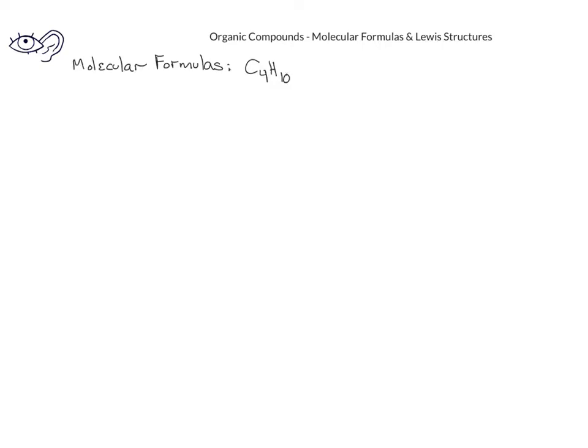In previous courses, you've learned about molecular formulas. These are ways of communicating the number of atoms of each kind that are present in a compound. For example, we can write the molecular formula for an organic structure as C4H10, indicating that there are four carbons and ten hydrogens.